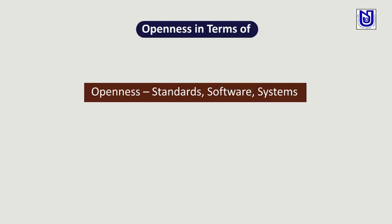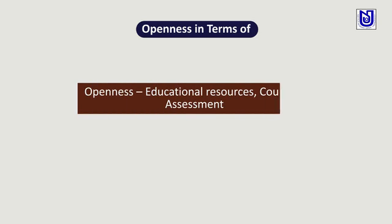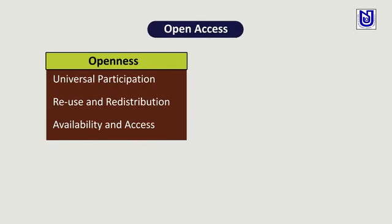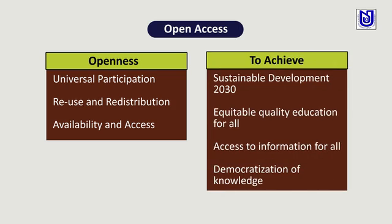Openness in terms of standard, software, and system — having an open standard, open source software, and entire system under open access practices makes it really feel good to have and work with resources. We have different kinds of educational resources, courses, assessments, journals under the terminology of openness, which ensures universal participation, reuse and redistribution, and availability and access to achieve sustainable development, equitable quality education for all, access to information for all, and democratization of knowledge.